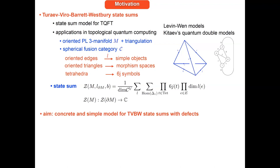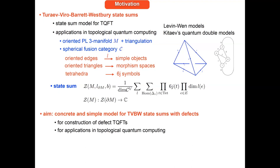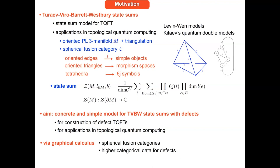The aim was to make a simple model in the spirit of the state sum with defects. For the construction of defect TQFTs it's useful to have a concrete model for explicit computation, and also for applications in topological quantum computing since these models are closely related to quantum double models. The idea was to do this via graphical calculus: translating the tetrahedra into diagrams in a monoidal spherical fusion category, and extending that graphical calculus to also incorporate defect data, then define a similar model with defects. This graphical calculus must combine the spherical fusion category data and the higher categorical data for the defects.